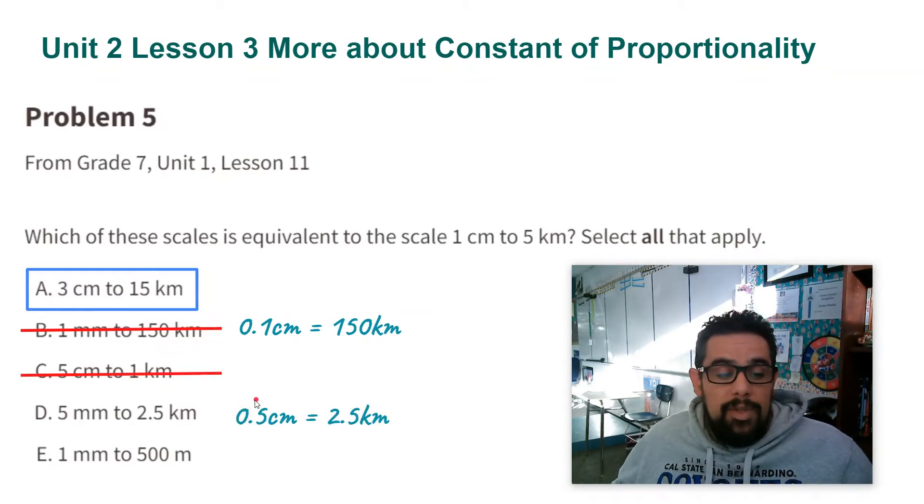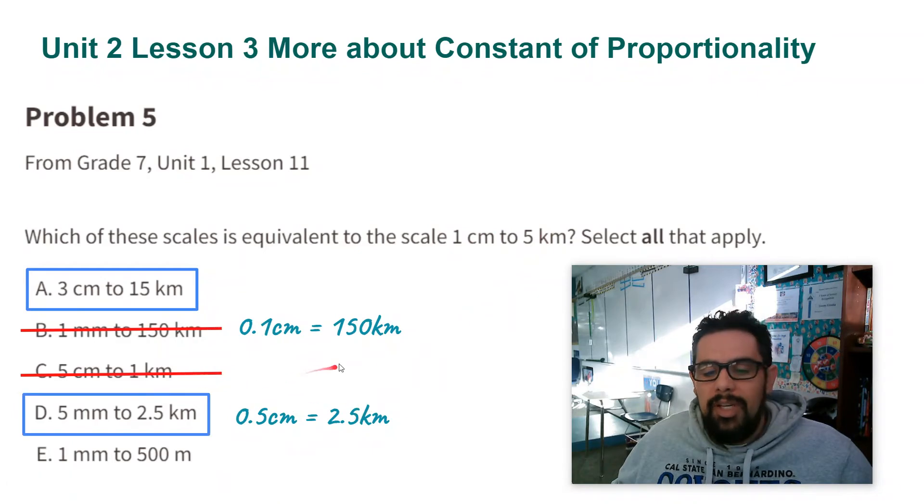For part D, I'm rewriting it with centimeters and kilometers. So five millimeters is half a centimeter. Two and a half kilometers is two and a half kilometers. Now let's look at these scales here. Are they equivalent? Yes, they are. So half a centimeter is half a centimeter. Half of five kilometers is two and a half kilometers. So this one is an equal scale.